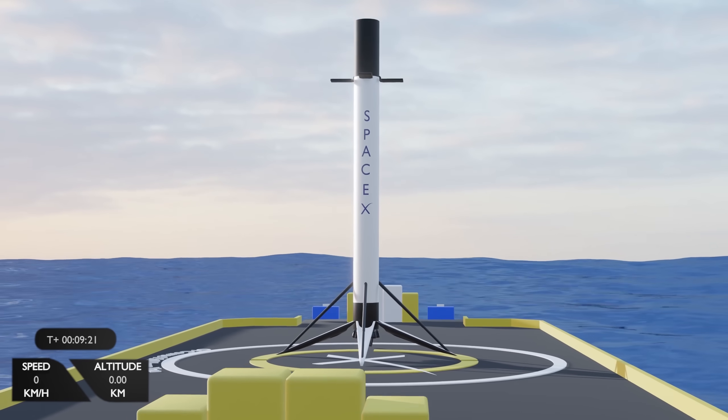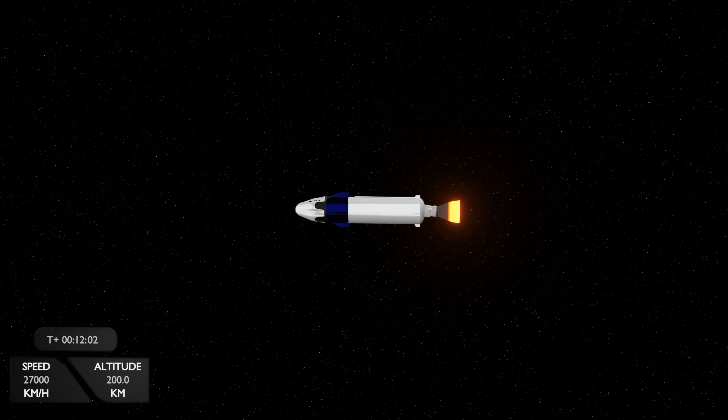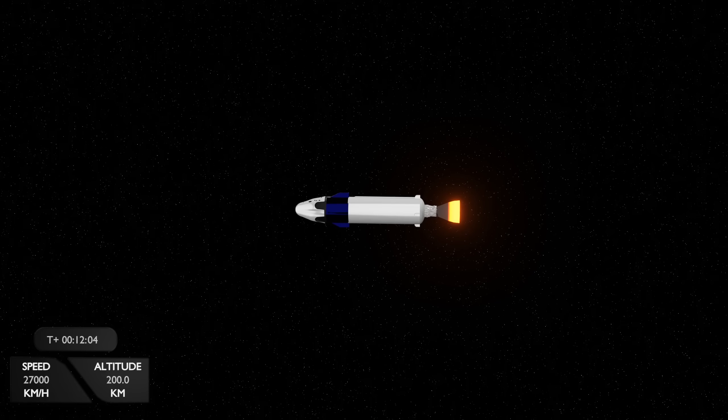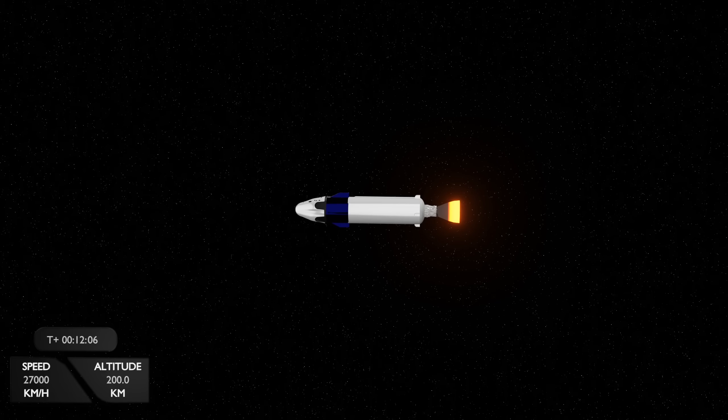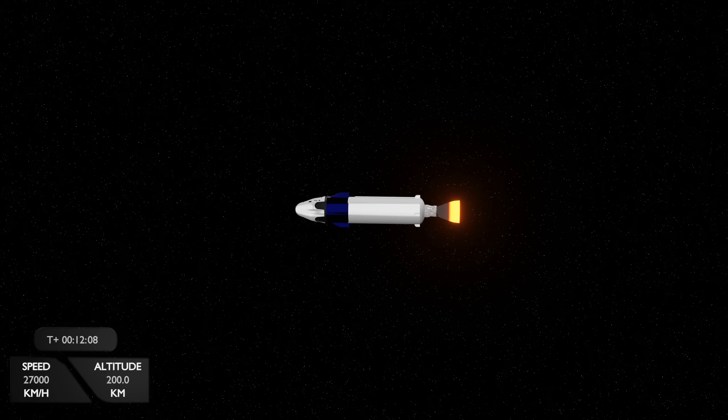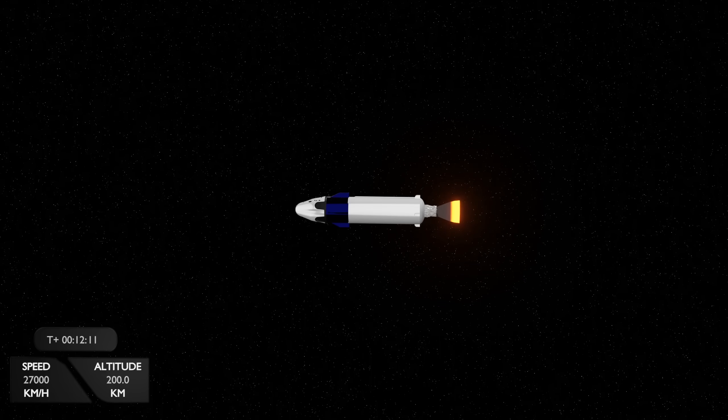While the first stage heads back to land, the second stage is traveling at a blistering 27,000 kilometers an hour at an altitude of 200 kilometers. The second stage then deploys its payload in this orbit and is therefore no longer needed.